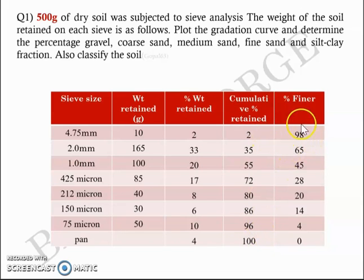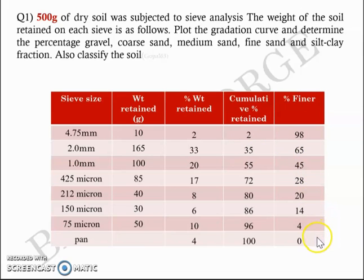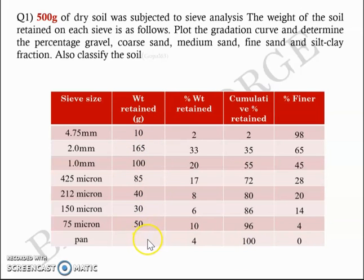Percentage finer is nothing but 100 minus cumulative percentage weight retained. So that's 98, 65, 45, etc. And at the bottom, you will definitely have zero if you have not missed out any particles. So if all the soil taken — 500 grams — is within this spectrum of sieves, you will definitely have 100 at the top and zero at the bottom.